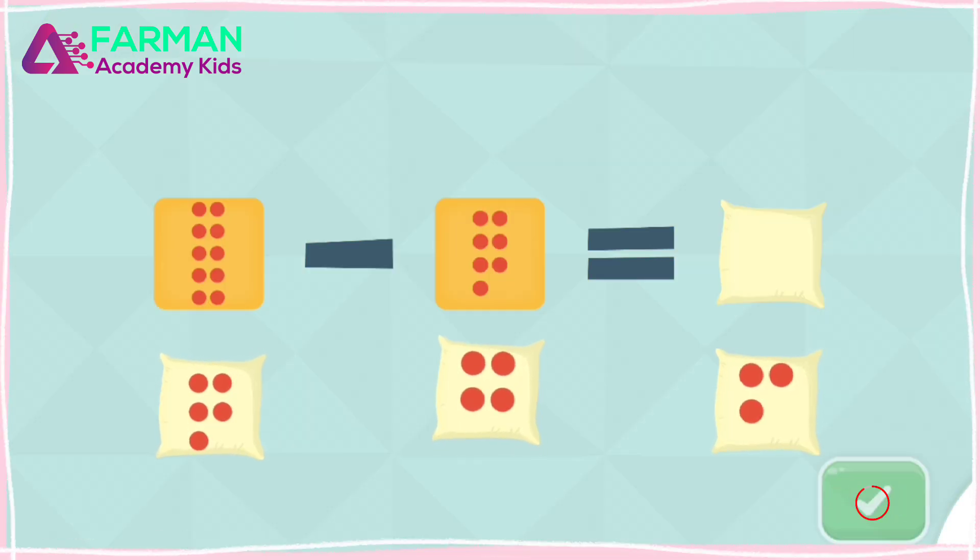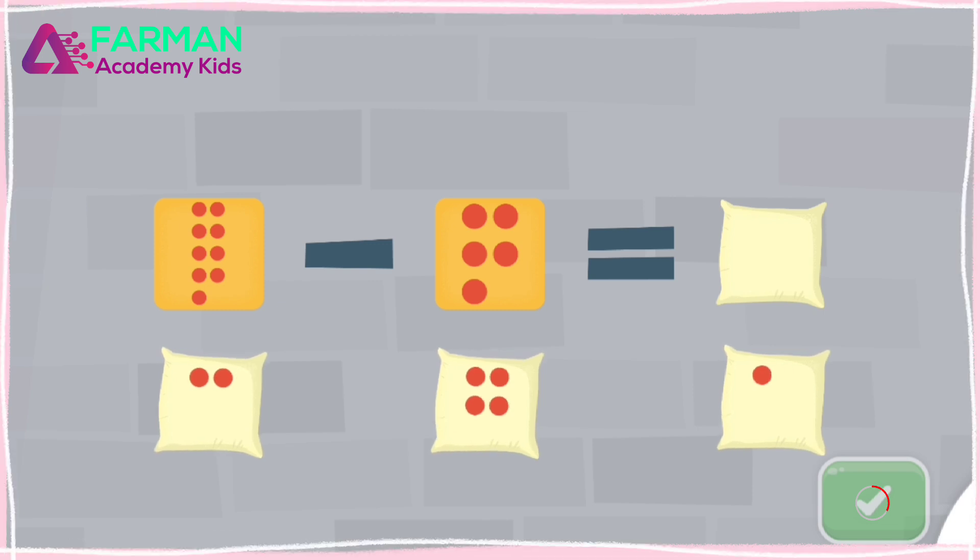What is 10 minus 7? Yay! 10 minus 7 is 3. What is 9 minus 5? Awesome! 9 minus 5 equals...